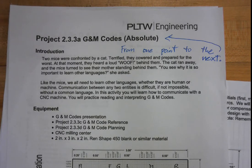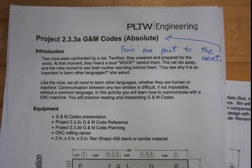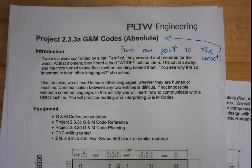All right, class, so today we're going to be talking about G/M code, and this is kind of your first introduction to it. G/M code is the code that a lot of manufacturing machines function on — like our CNC machine functions on it, 3D printers use that code, and laser cutters use that code.